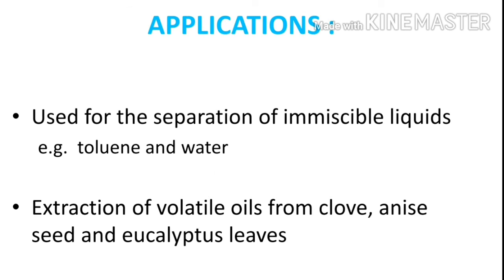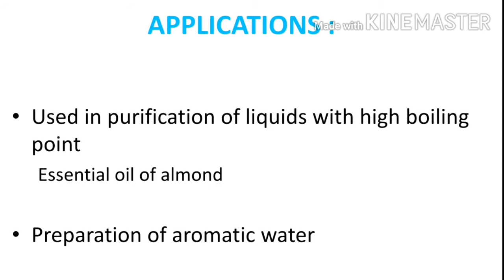Now the applications of steam distillation. Steam distillation is a method mainly used for the separation of immiscible liquids. We can separate toluene and water, or turpentine and water mixtures. It is also used for the extraction of volatile oils from anise seeds, clove, and eucalyptus leaves. This method is used for the purification of liquids with high boiling points, for example essential oil of almond. It is also used for the preparation of aromatic water.